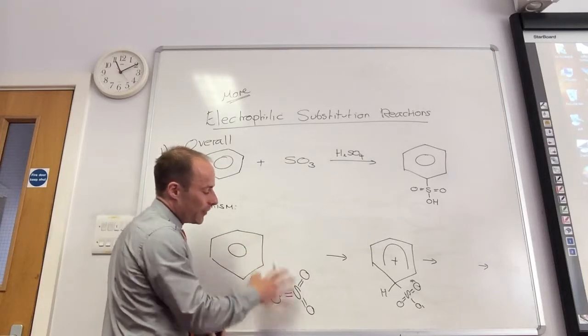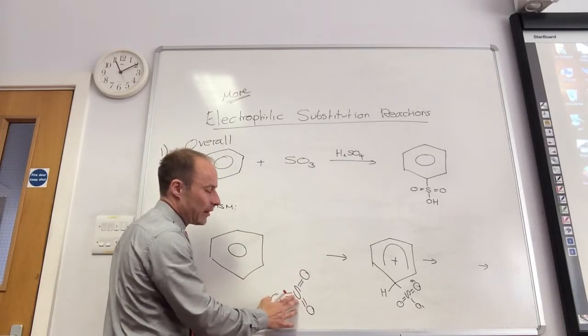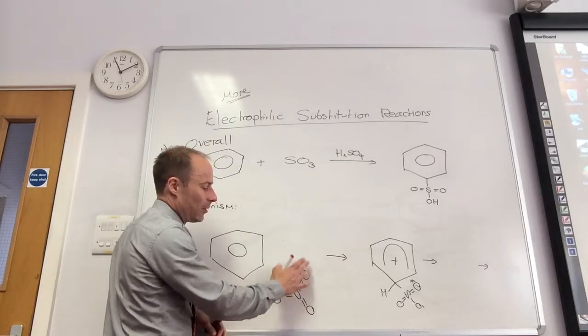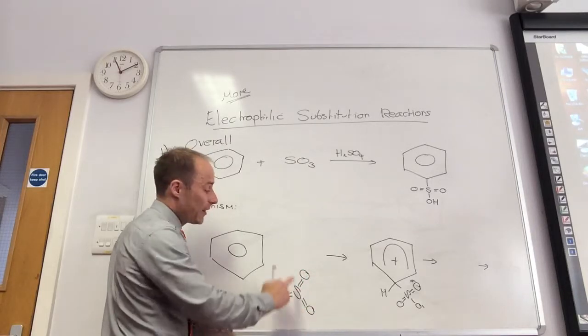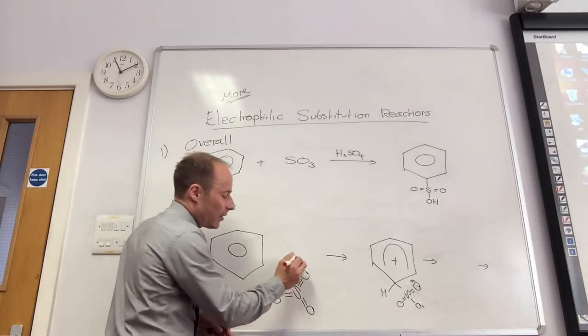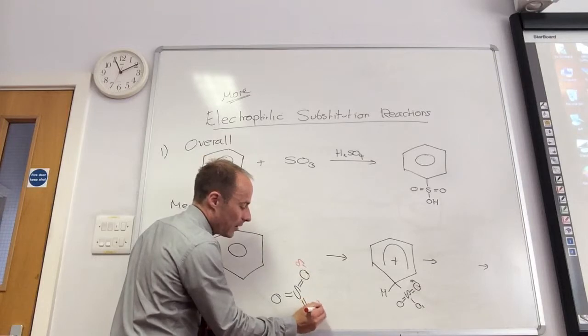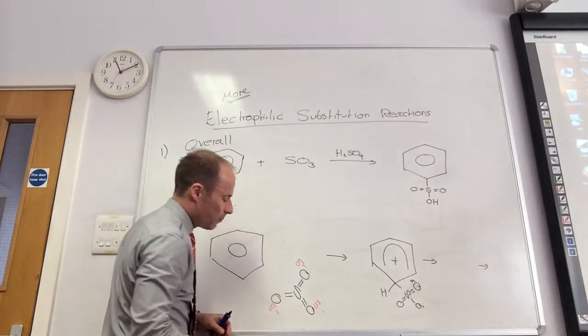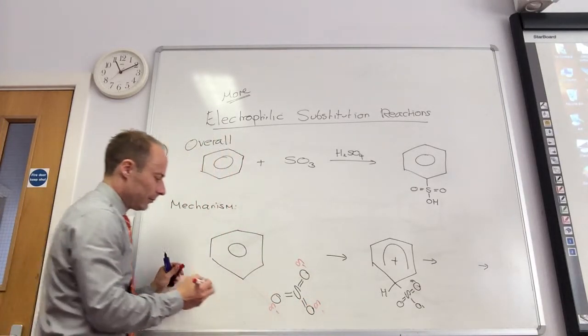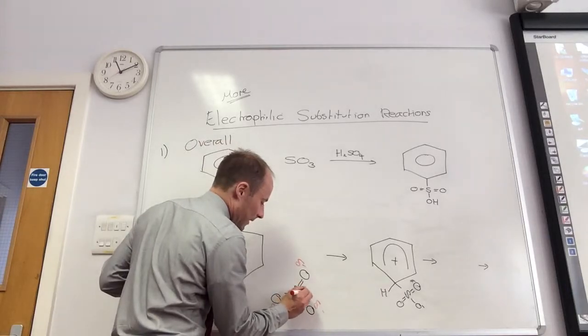How would I know that the sulfur was going to be delta positive if I just ignored all of this? Because of electronegativity. Oxygen is really electronegative, so I can put in my dipoles. You may see in the question, put the dipoles on, and then sulfur is delta plus.